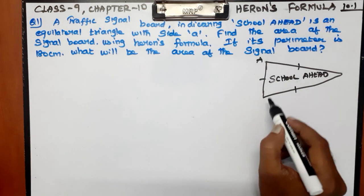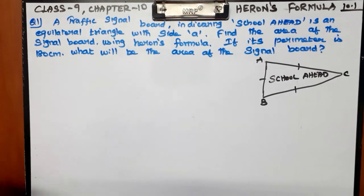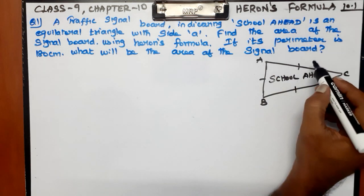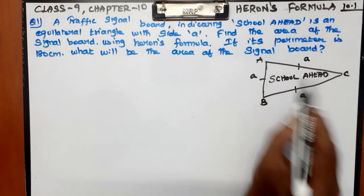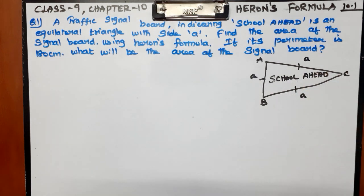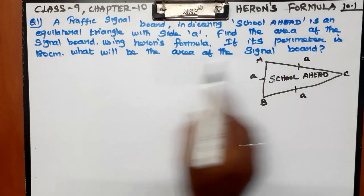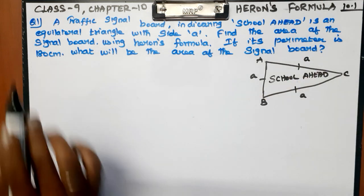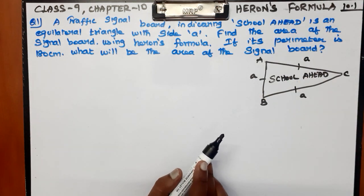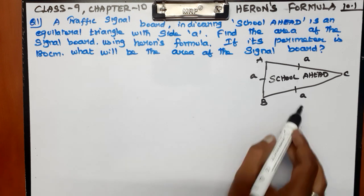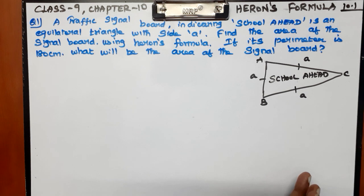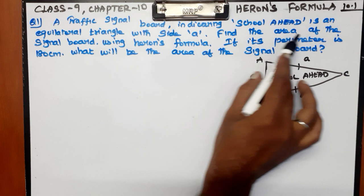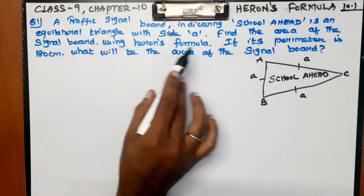I will label the equilateral triangle using A, B, C. By using Heron's formula, if its perimeter is 180 cm, find the area of the signal board using Heron's formula.